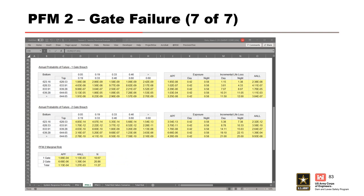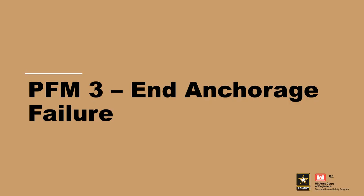Our last step is to calculate the marginal risk for the 1-gate breach scenario, 2-gate breach scenario, and total PFM 2 risk, just as we did for PFM 1. Now we move on to our third and final PFM, PFM 3 for End Anchorage Failure.